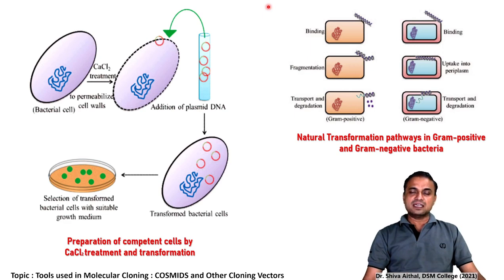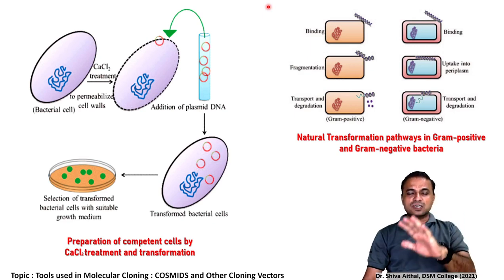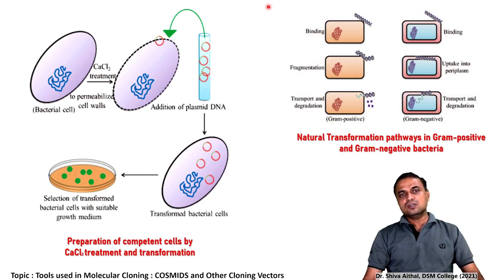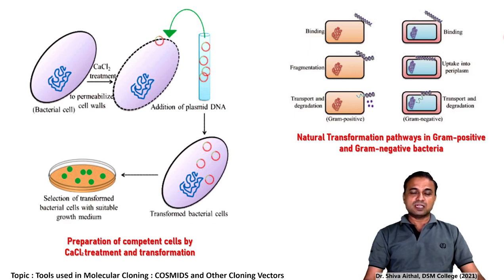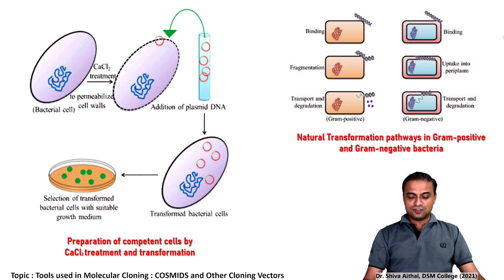Natural transformation pathways in gram-negative and gram-positive bacteria are different, making natural transformation very species-specific — not all bacteria, though the majority, show natural transformation phenomena. However, by the artificial method you can create transformant cells for any species — you can 100% create transformed cells. This is the same principle seen in Griffith's experiment, so I will not elaborate on the natural transformation pathway which you should already know as a basis for understanding this artificial transformation.